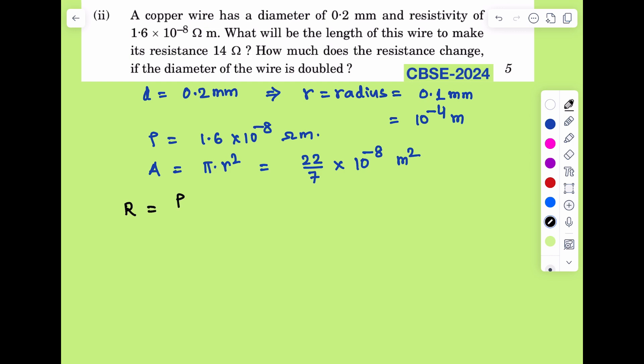And the formula for the resistance R we know it is rho L by A. This implies L is equal to R into A by rho.